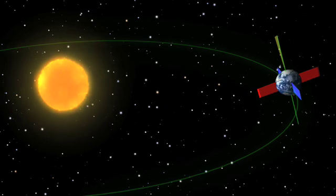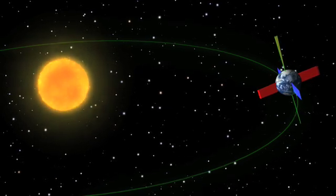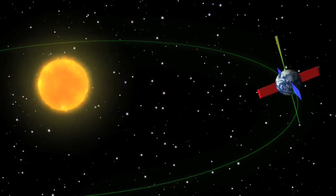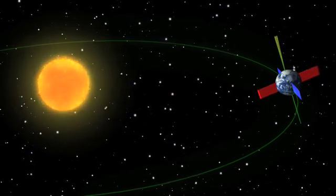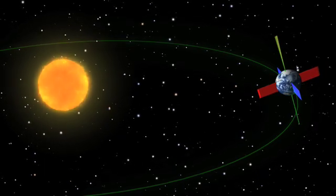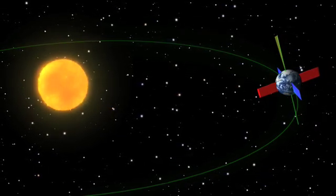This change in tilt is directly related to ice ages on Earth. The last maximum tilt occurred in 8700 BC, and the next minimum tilt will happen in 11,800 AD.